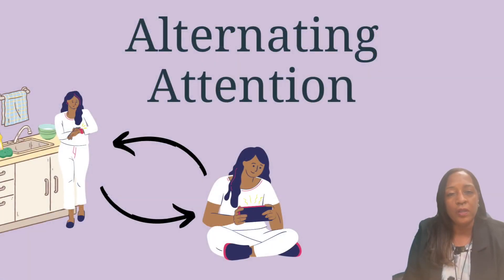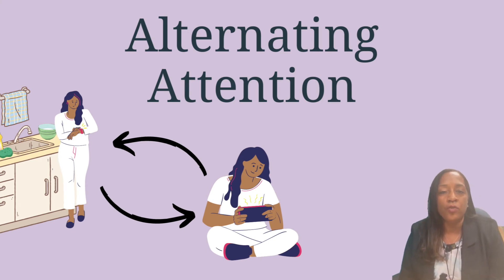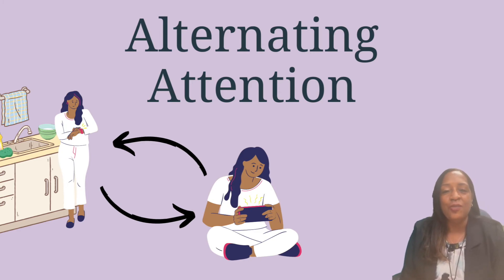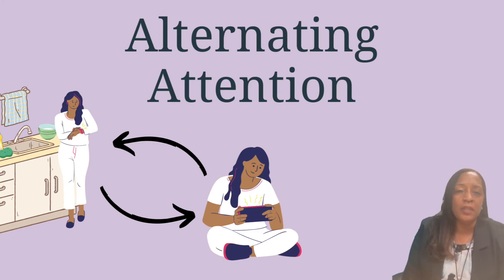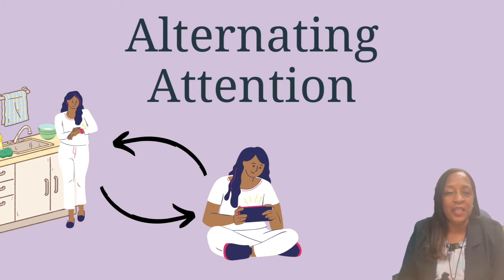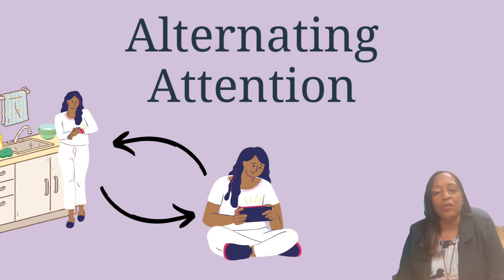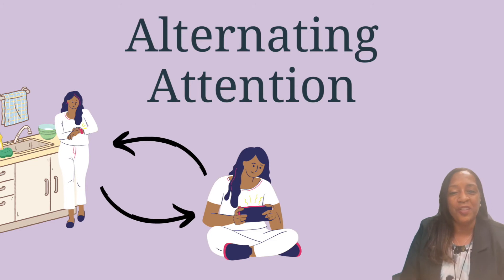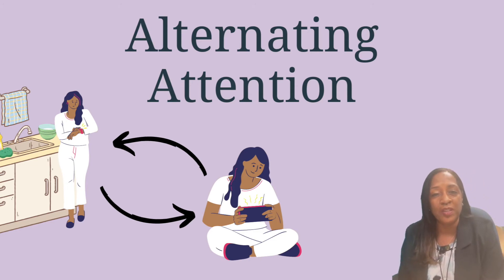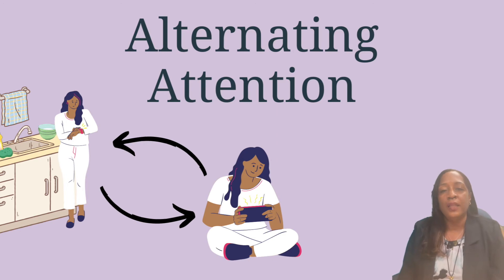Number four is alternating attention — the ability to go back and forth between two different things. For example, you are cooking and going back and forth — putting in ingredients and sequencing whatever you're doing. Then you leave the room to do laundry, and then you come back remembering where you were with the cooking. That type of thing.